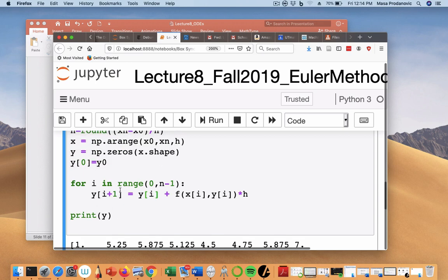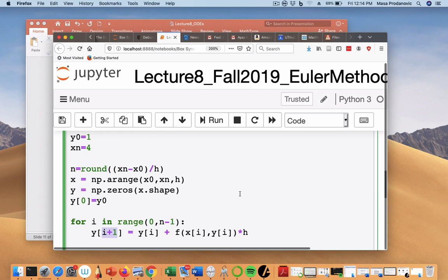But basically, this is my step. yi plus 1 is y of i plus slope times h. It's a very simple for loop. And I go to n minus 1 because I have i plus 1 here. So I got to be careful not to overdo it.